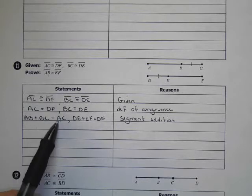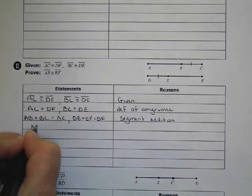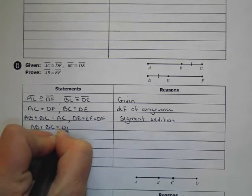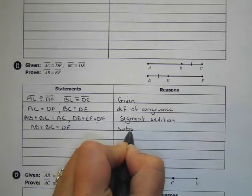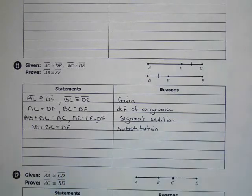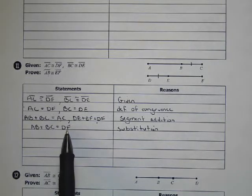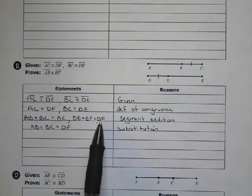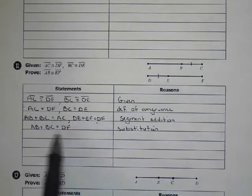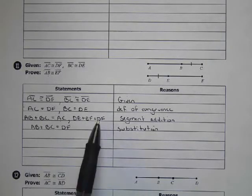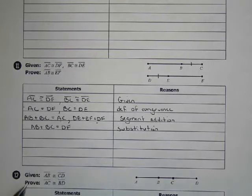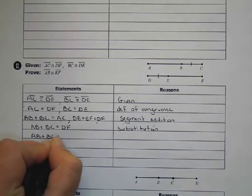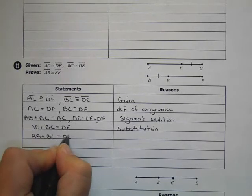So I can rewrite this. AB plus BC equals DF. And that starts to look like this one now. So I'm kind of getting somewhere in my little puzzle. So this is substitution. Now I can look and see, oh, wait a minute. Now this sum equals DF, and this sum right here equals DF. So I have two different addition problems equaling the same thing. So again, I'm going to use my substitution property to help me out. So I know that AB plus BC equals DE plus EF. Since they're both equal to DF, I can substitute.